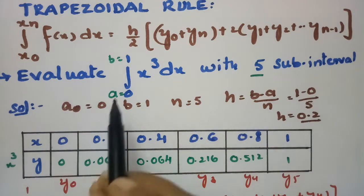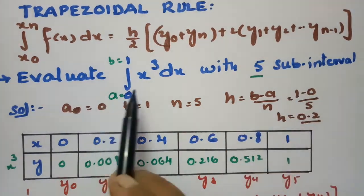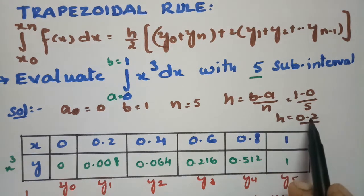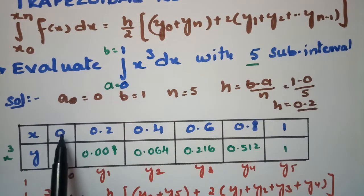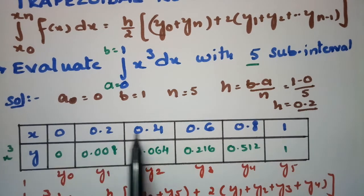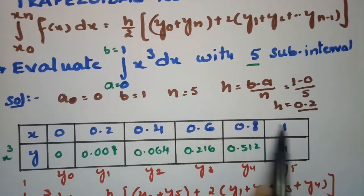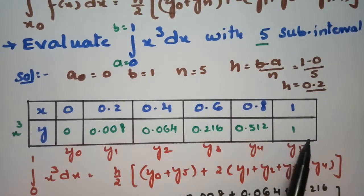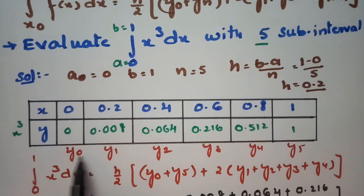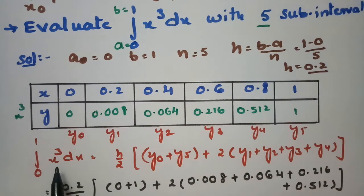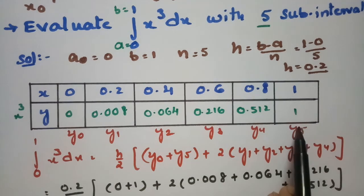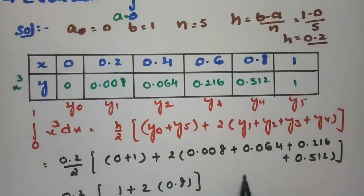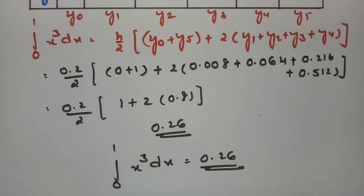To recap: the trapezoidal rule formula is h/2 times the sum of the first and last ordinate plus 2 times the remaining ordinates. For this problem, a = 0, b = 1, and n = 5, giving h = 0.2. We add 0.2 at each step from 0 up to 1, compute x³ at each point to get y0 through y5, substitute into the formula, and calculate to get the integral from 0 to 1 of x³ dx equal to 0.26.